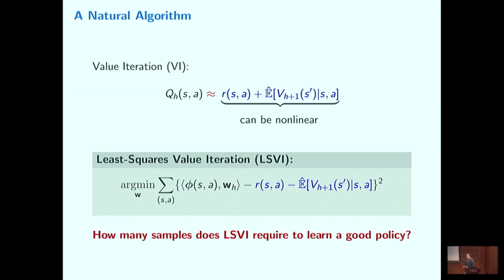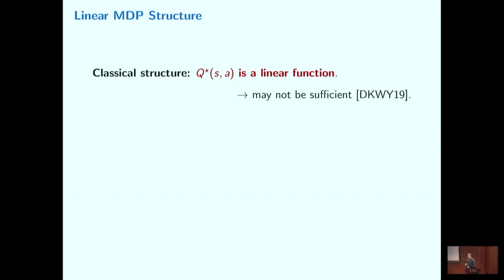What is really missing to solve this problem? For many years we have been trying to solve this under the assumption that only q* — the optimal value function — is a linear function. As discussed in Sham's talk this morning, this assumption may be too weak. Sham's results already show that if q* is only almost a linear function, no algorithm can find the optimal policy in polynomial samples.